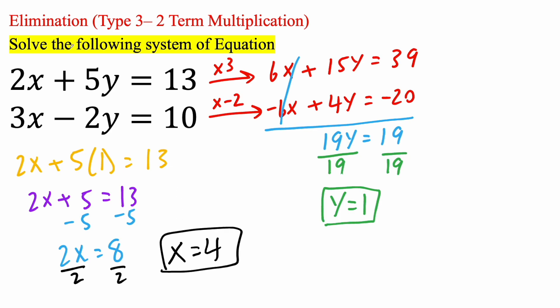But it's always a good idea to check. 2 times 4 is 8. 5 times 1 is 5. 8 plus 5 is 13. And now for the second equation. 3 times 4 is 12. Negative 2 times 1 is negative 2. 12 minus 2 is 10. And so, it checks out.